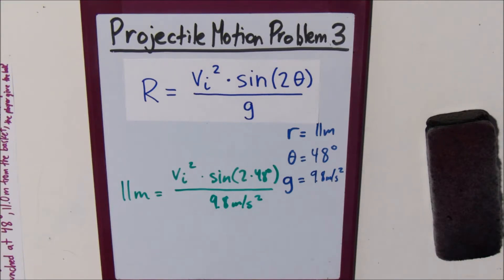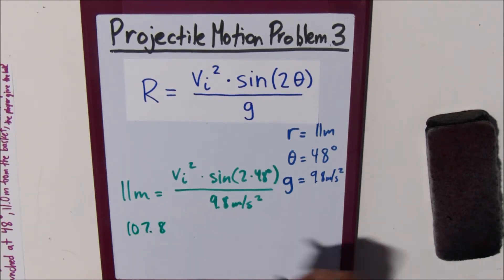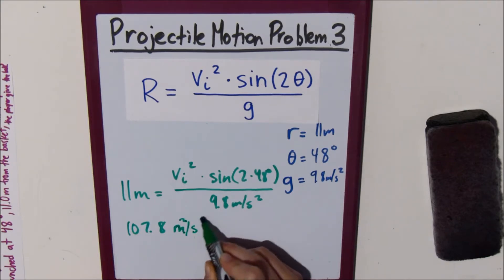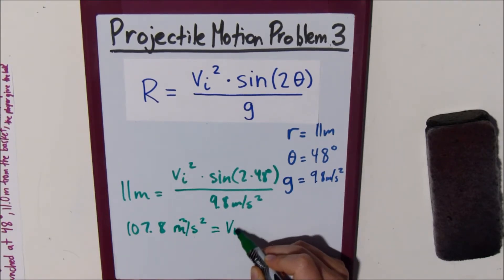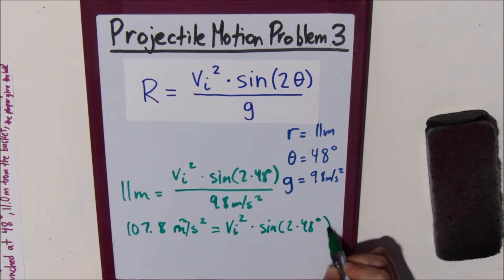So, where is my calculator? The first thing we're going to do is multiply both sides by 9.8. So, 11 times 9.8, we get 107.8, and this would be in meters squared divided by second squared, times sine of 2 times 48 degrees.